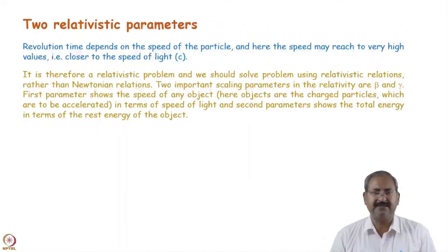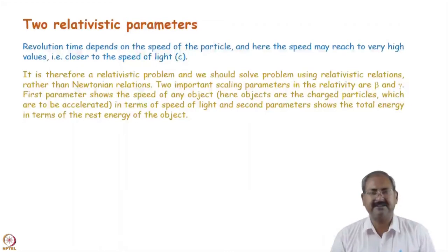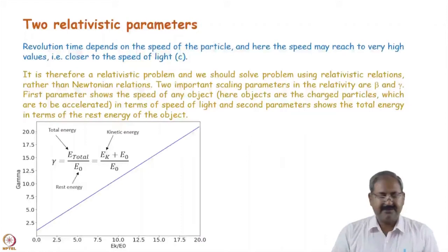In accelerators, particle energies can range from a few keV for some industrial applications up to TeV in the case of colliders. When the energy is much higher than the rest mass energy of the particle, the speed may be close to the speed of light. So particles can have a very wide speed range, and we must use relativistic mechanics for calculations.